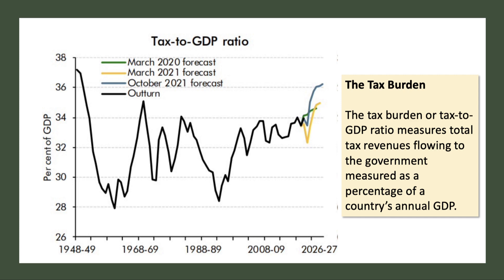The tax burden measures all the taxes coming into the government, expressed as a share of GDP. That has now reached the highest level since nearly 70 years ago — since the early 1950s. This chart on the screen is taken from the Institute of Fiscal Studies, and it tracks the path of the tax burden since the late 1940s.